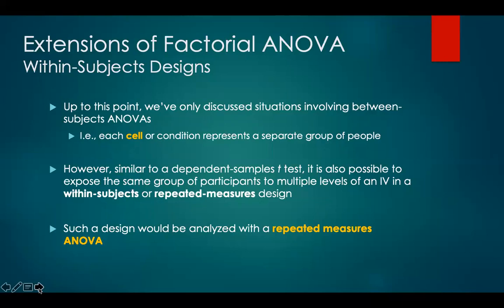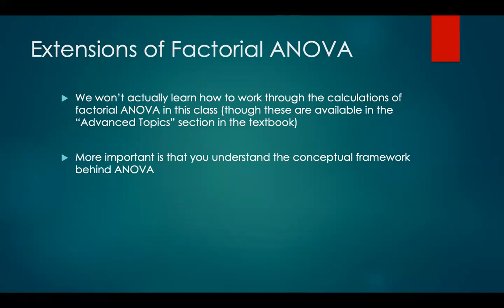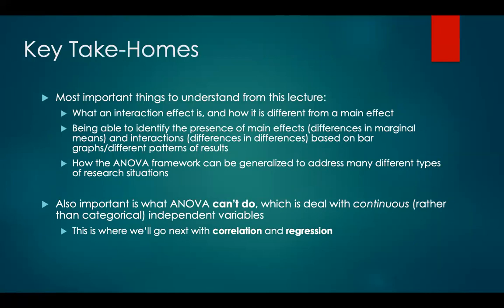We won't actually work through the calculations of factorial ANOVA in this class — these are available in the advanced topics section of the textbook — but more important is that you understand the conceptual framework. The most important things to understand are: what is an interaction effect and how is it different from a main effect; how to identify main effects (differences in marginal means) and interactions (differences in differences) from bar graphs; how the ANOVA framework generalizes to different combinations of IVs and levels, and between- versus within-subjects designs. Also equally important is what ANOVA can't do, which is deal with continuous rather than categorical independent variables — and this is where we'll go next, with correlation and regression.